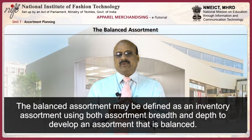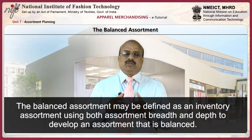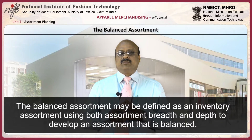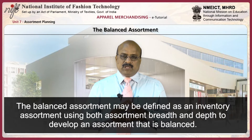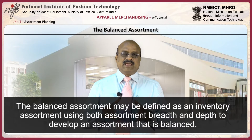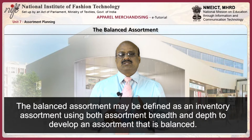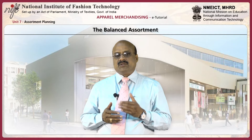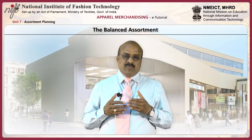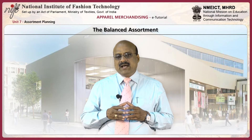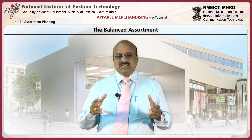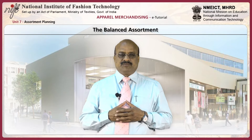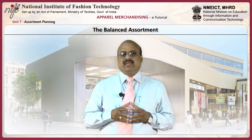The balanced assortment may be defined as an inventory assortment using both assortment breadth and depth to develop an assortment that is balanced. For example, broad assortments are used early in the season when new styles are still being tested for consumer acceptance. However, narrow and deep assortments are used later in the season when demand is clearly defined. A balanced type of assortment may be used by mass merchandisers as well as by stores boasting a high fashion image, and may be considered a normal compromise.